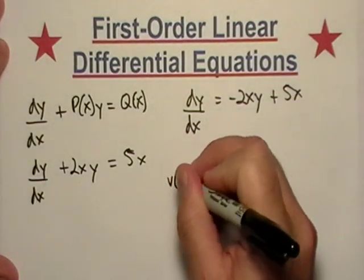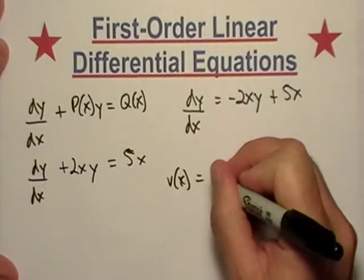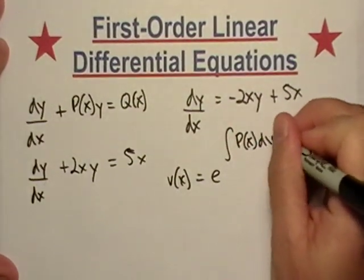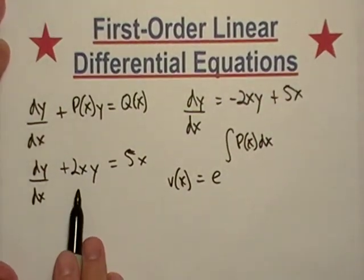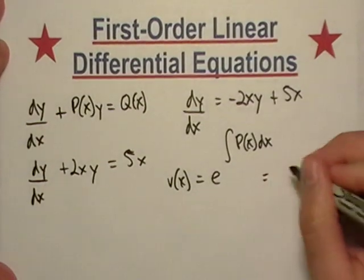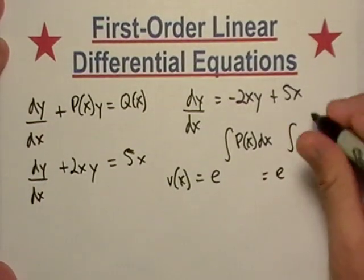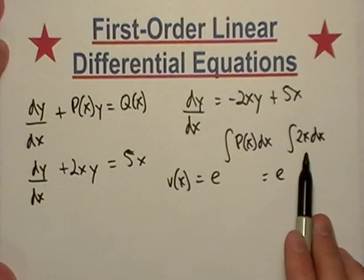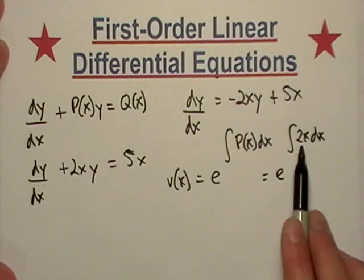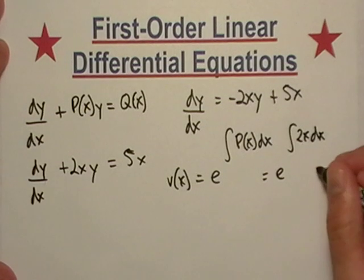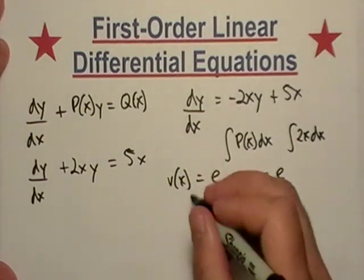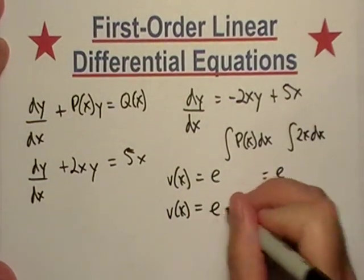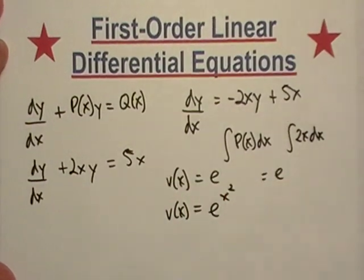Okay, so remember that integrating factor I'm looking for, that is e raised to the integral of P(x) dx. So that will translate into e raised to the integral of 2x dx, probably another one we could have just done in our head. Okay, integral of 2x, that's just x squared. So v(x) is equal to e to the x squared.